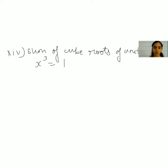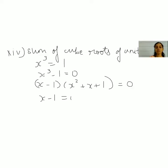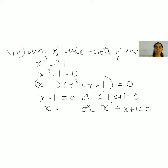We write x cubed minus 1 equals 0, then factorize: (x minus 1)(x squared plus x plus 1) equals 0, using the a-cubed minus b-cubed formula. So x minus 1 equals 0, giving x equals 1, or x squared plus x plus 1 equals 0. Since this quadratic cannot be factored normally, we use the formula b squared minus 4ac to find the remaining two roots.